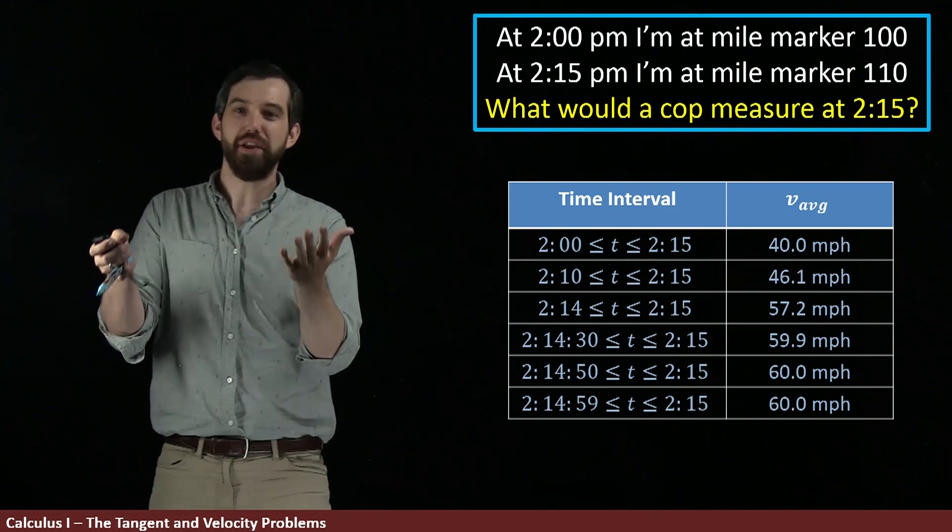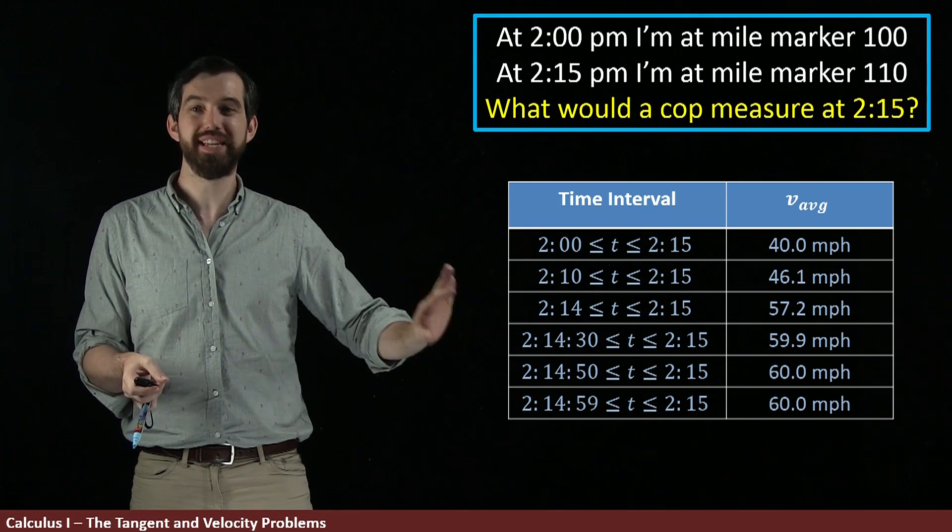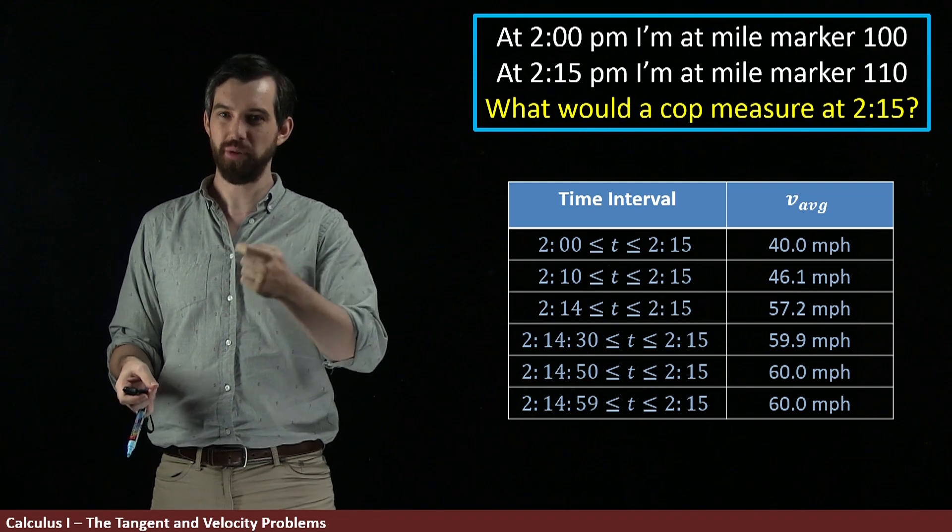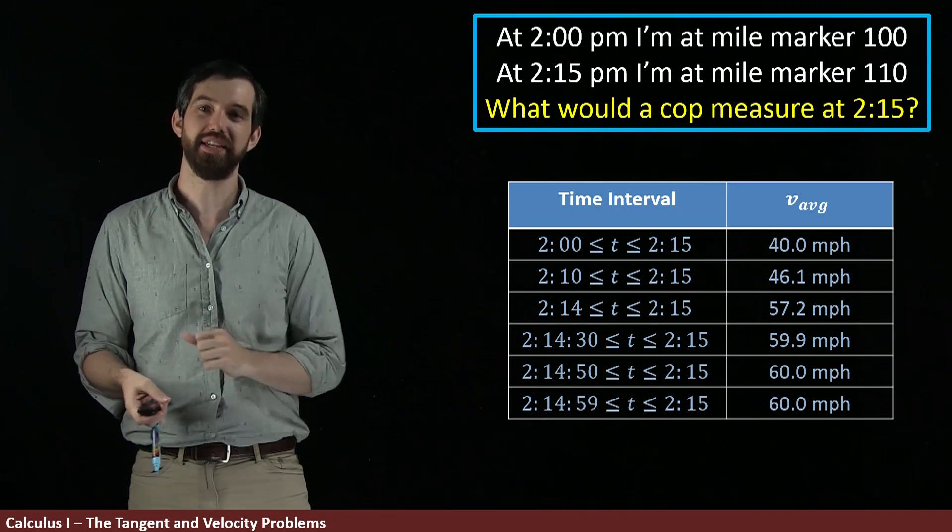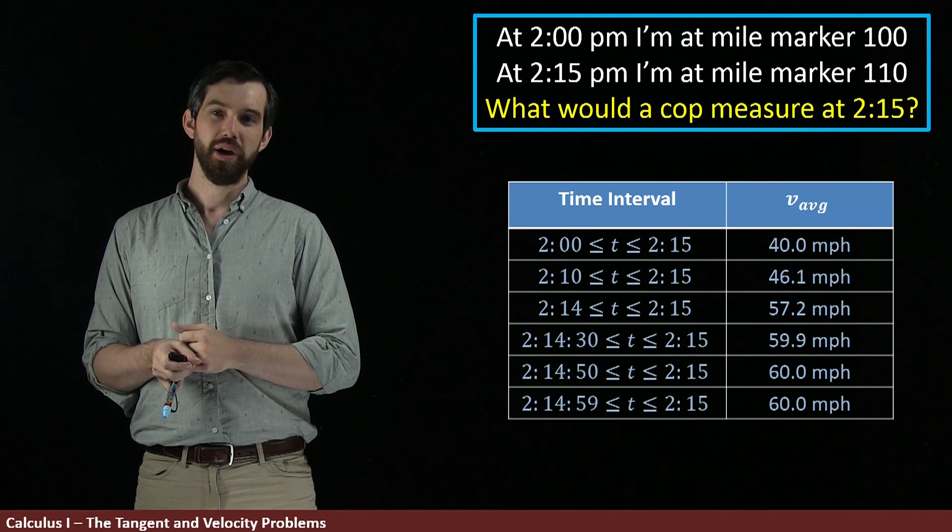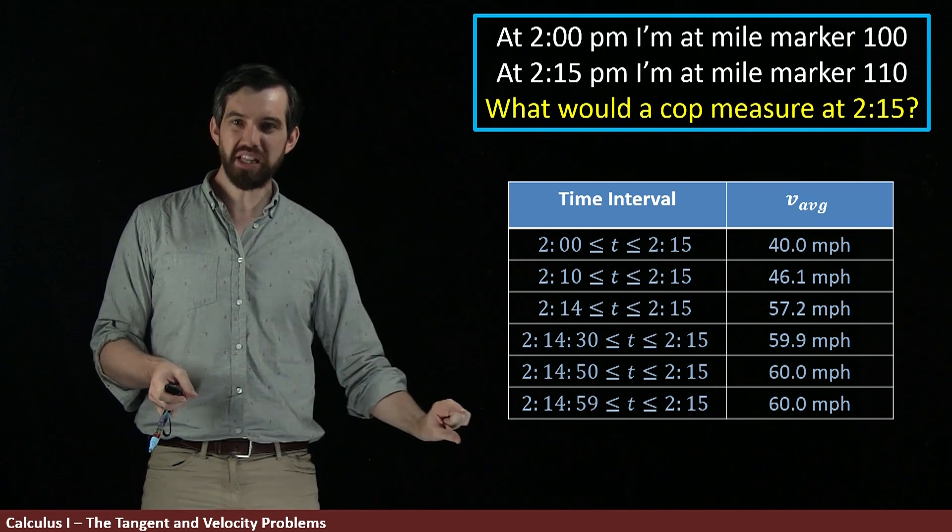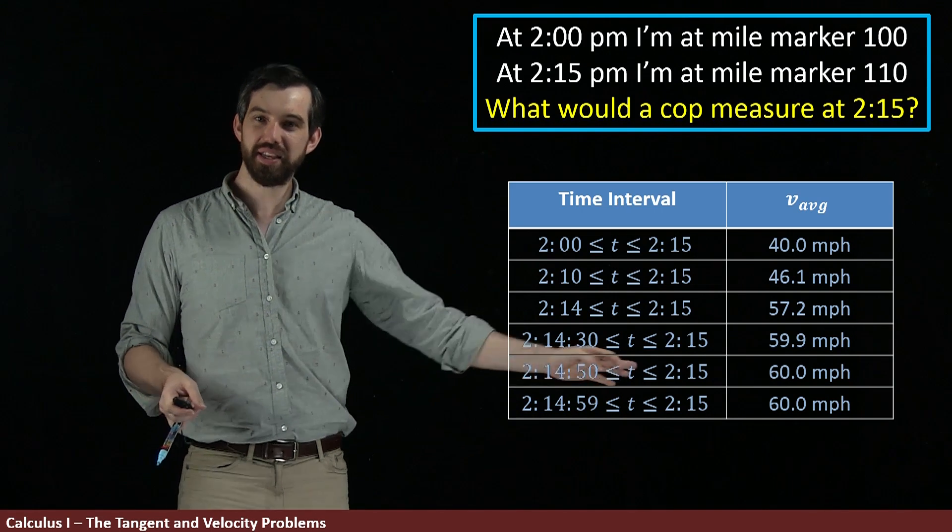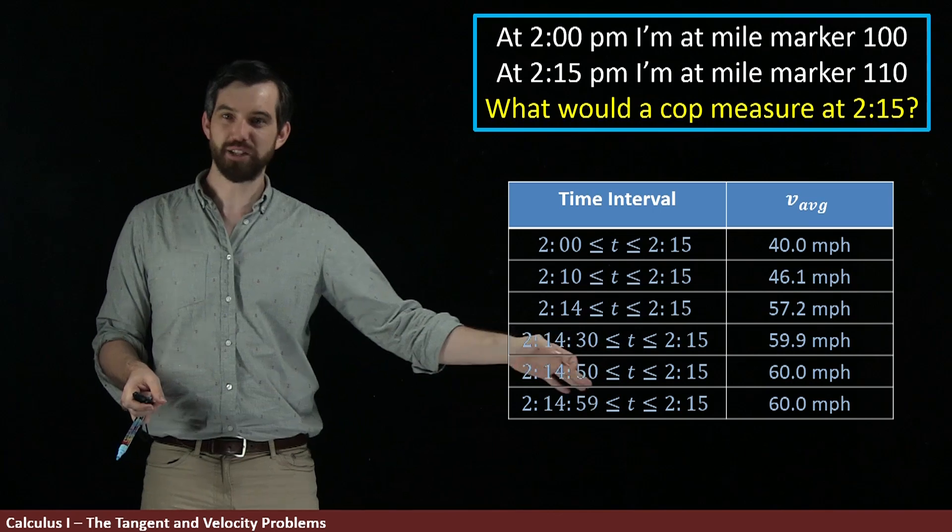Now, if you were a cop and you had this table of data of our different average velocities, then do you think that you should be getting a ticket at the 60 miles per hour if you're driving in the city? Well, if you only look down here at the bottom, at that last second, and you see that this average velocity is the 60 miles per hour, you can be really confident that at the time of 2:15,